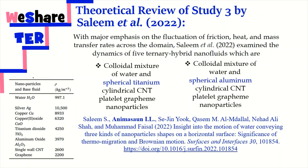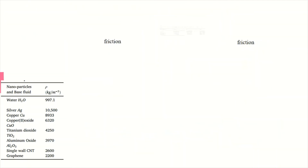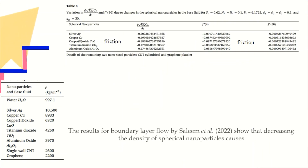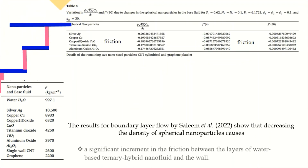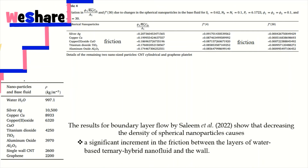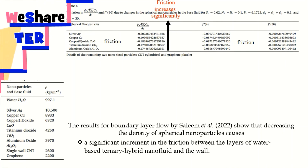The last ternary hybrid nanofluid is a colloidal mixture of spherical aluminum, cylindrical carbon nanotubes nanoparticles, platelet graphene nanoparticles, and water. The results for boundary layer flow by Salim and others show that decreasing the density of spherical nanoparticles causes a significant increment in the friction between the layers of water-based ternary hybrid nanofluid and the wall.